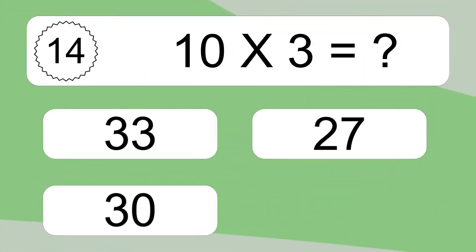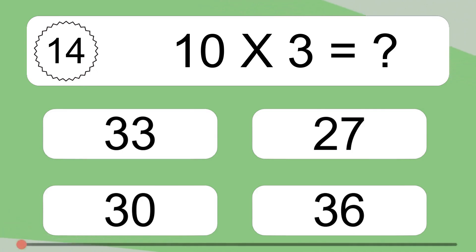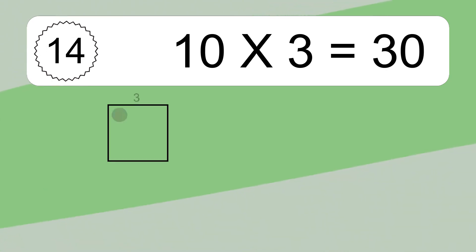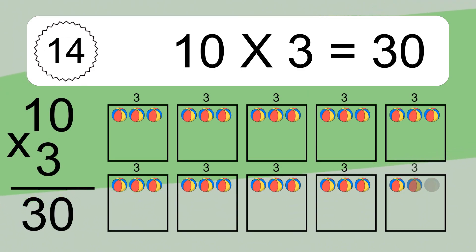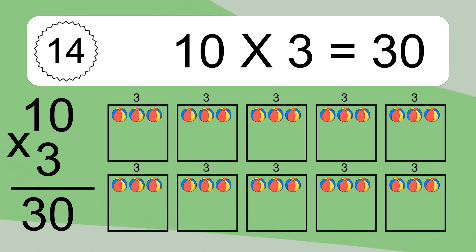10 times 3 equals what? 10 times 3 equals 30.